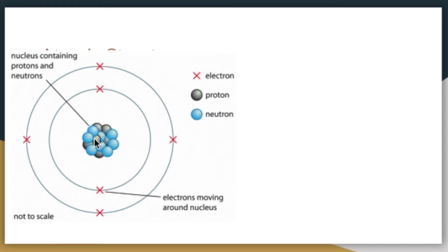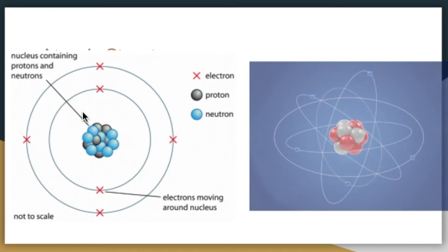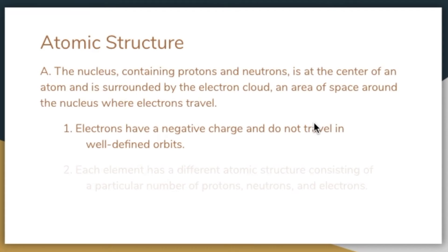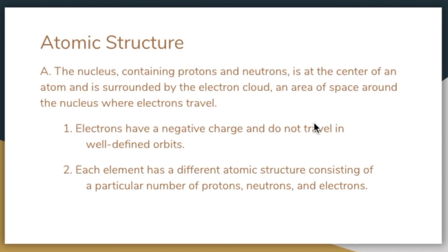Inside the center of our atom model is the nucleus — the positively charged protons and neutral neutrons. We know electrons exist outside the nucleus with a negative charge. Another picture identifies each part: the nucleus contains protons and neutrons in the center; electrons are negatively charged particles moving around the nucleus. Sometimes depicted in circles or energy levels, but in reality they exist in what's called electron clouds, floating around without a defined space — moving in all different directions surrounding the positive center. Because the center is positive and electrons are negative, they're naturally drawn toward each other.